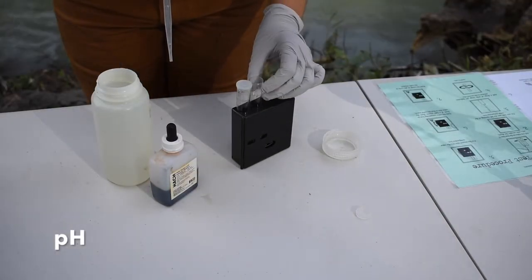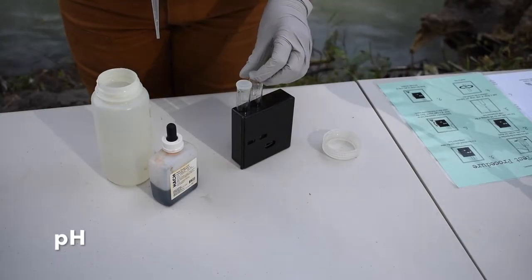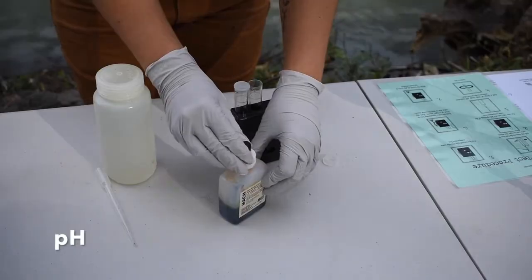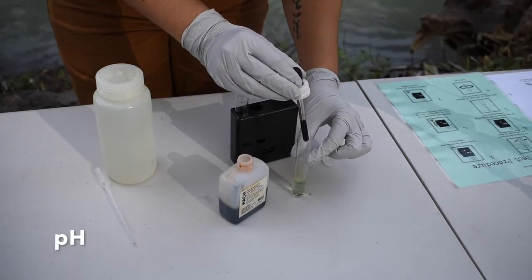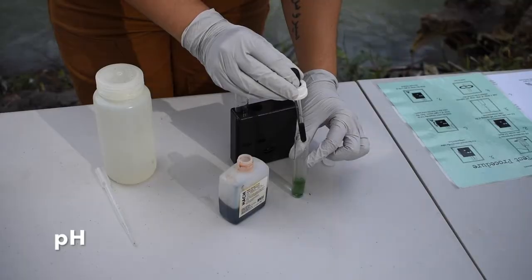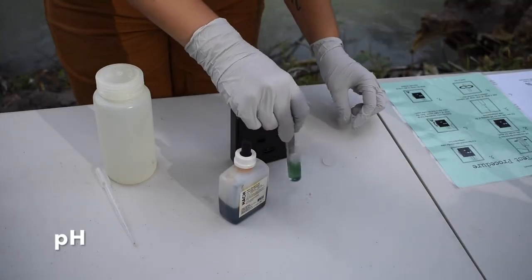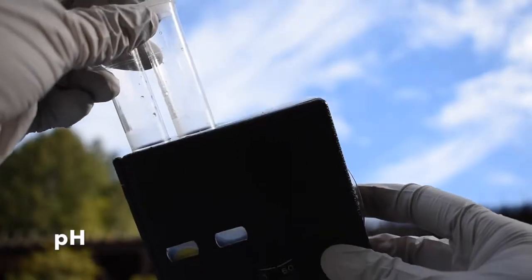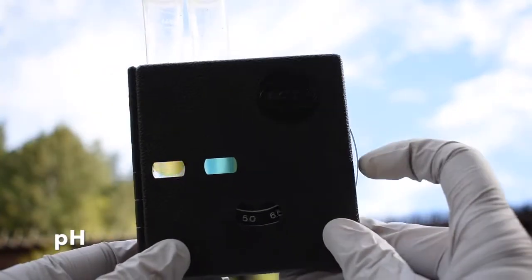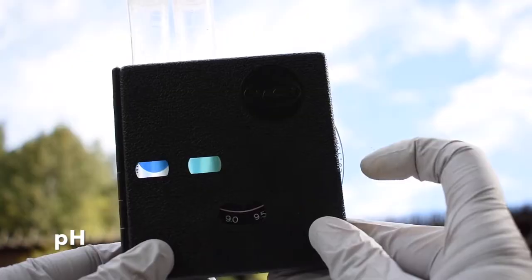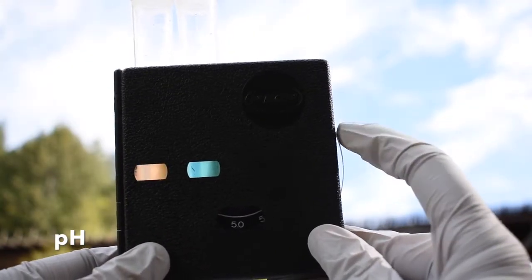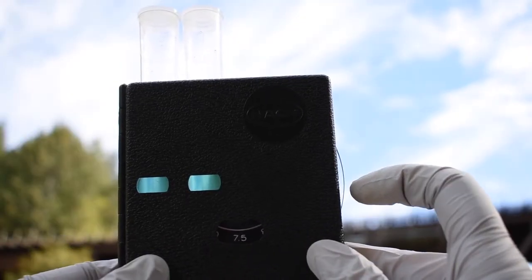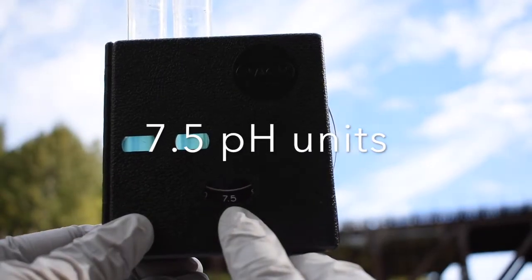Next, we will add 6 drops of our pH indicator solution to one of the tubes. After swirling to mix, we put that tube into the right slot in the color comparator box. Next, we rotate the color wheel until we find a color that matches our sample. The number on the bottom of the comparator box will show us our pH value.